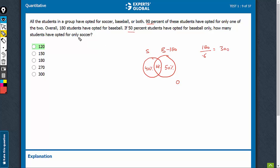How many have opted for only soccer? 300 is the total. 40% of 300, 120 have opted for only soccer. That's the right answer.